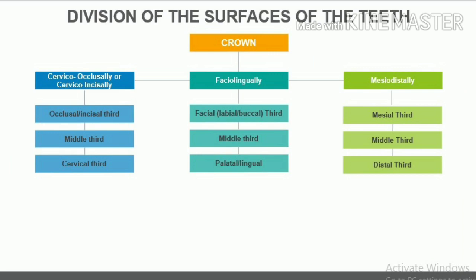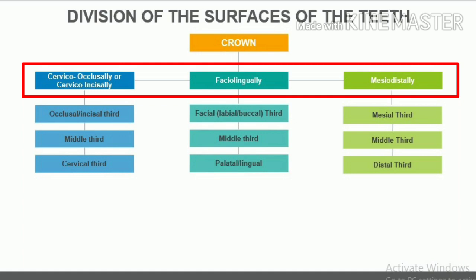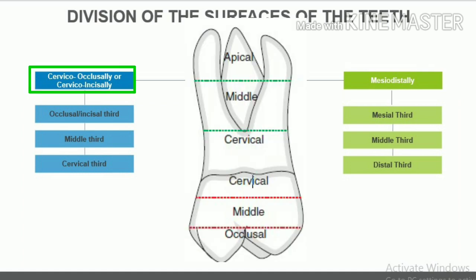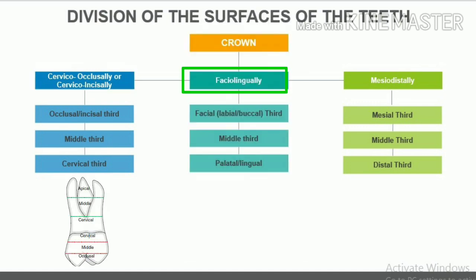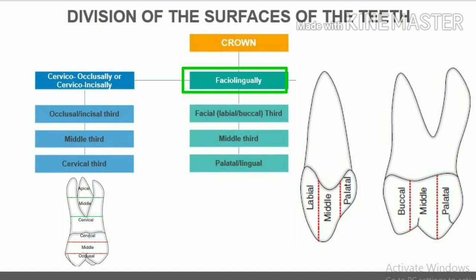Division of the surfaces of the teeth. The crowns and roots are arbitrarily divided into thirds and named according to their location. The crown can be divided cervico-occlusally or cervico-incisally by equally spaced horizontal lines into: occlusal or incisal third, middle third, and cervical third. Facio-lingually, the proximal surfaces of the crown are divided into: facial (labial or buccal) third, middle third, and palatal or lingual third.